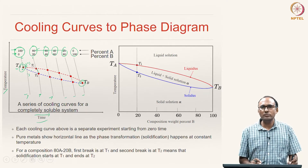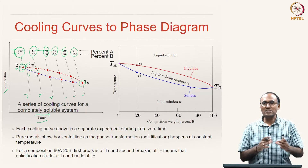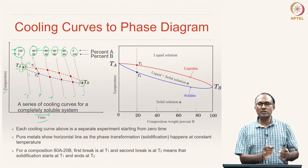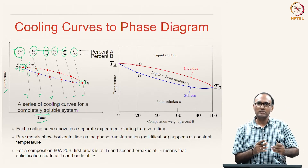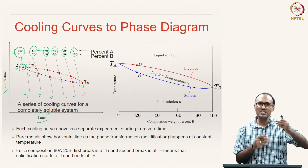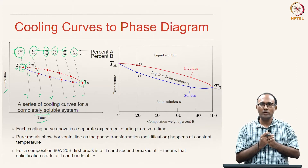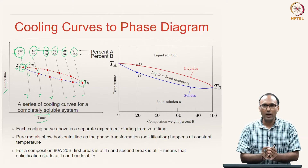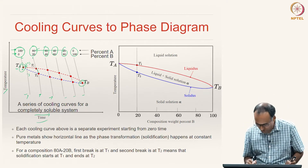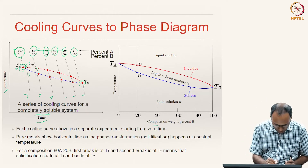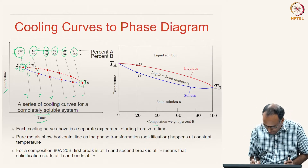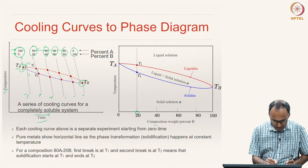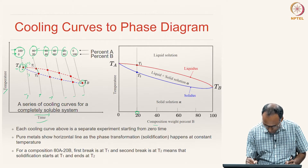If we plot the same information on a temperature-composition diagram, assuming sufficiently long time so that equilibrium is maintained at every instance, we remove time from the picture and draw temperature versus composition. At a given composition — say 80/20 — solidification happens over a range of temperature while the composition remains fixed, which is why it appears as a vertical line on this diagram.